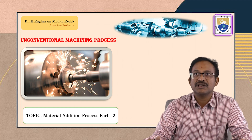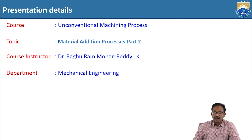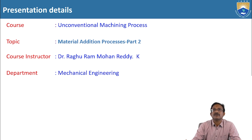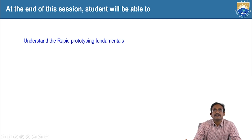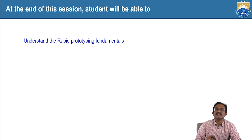The course name is Unconventional Machining Process. The topic is content beyond the syllabus of this unconventional machining process — specifically, Material Addition Processes Part 2. At the end of this session, students will be able to understand the rapid prototyping fundamentals. This is the course learning outcome.